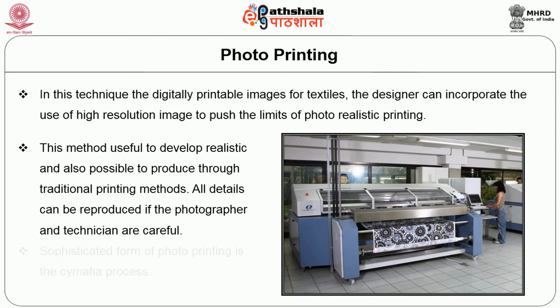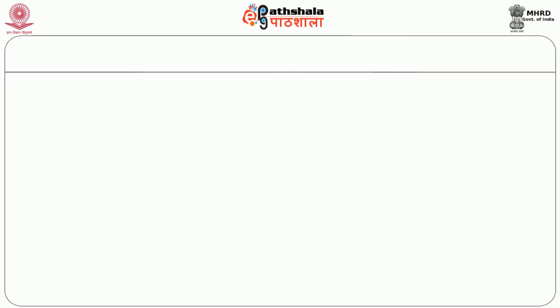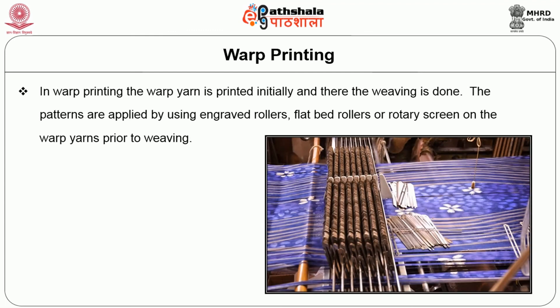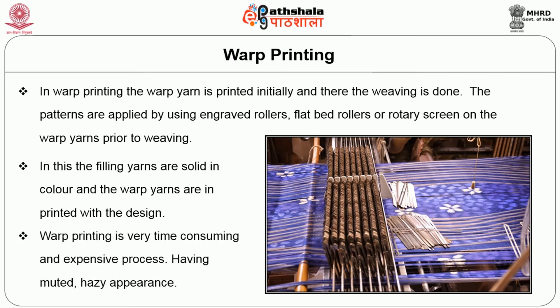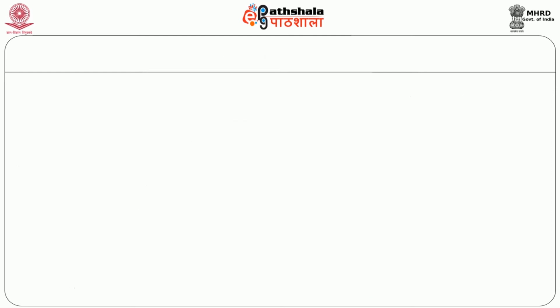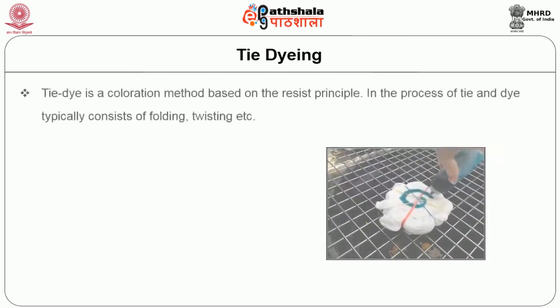Warp printing: in this method, the warp yarn is printed initially and then the weaving is done. The patterns are applied by using engraved rollers, flatbed rollers, or rotary screens on the warp yarn prior to weaving. In this process, the filling yarns are solid in color and the warp yarns are printed with the design. Warp printing is a very time-consuming and expensive process, having a muted, hazy appearance.